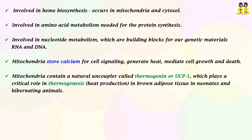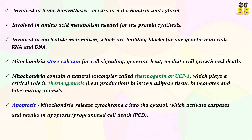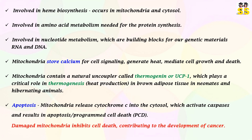They contain a natural uncoupler called thermogenin, which plays a critical role in thermogenesis in brown adipose tissue. In apoptosis, release of cytochrome C from mitochondria into the cytosol activates caspases and leads to programmed cell death. Damaged mitochondria inhibit apoptosis, contributing to cancer development.